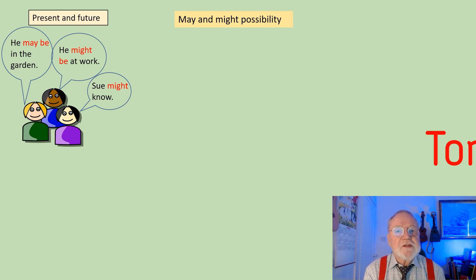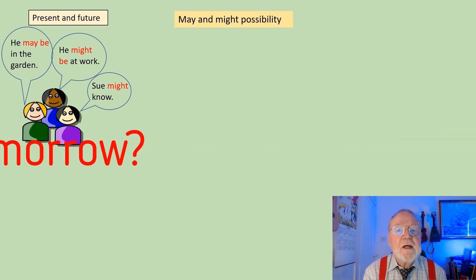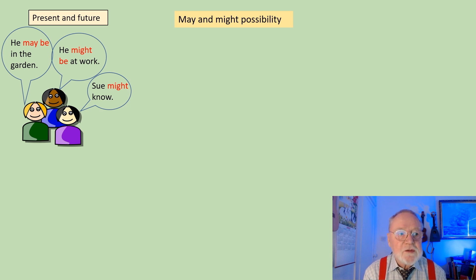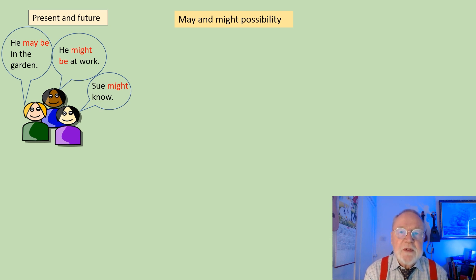Supposing I said: where will Peter be tomorrow? Well, I can actually use the same answers. He may be in the garden. He might be at work. Sue might know. If you put the adverb 'tomorrow' after any of these, you'll see why — Sue might know tomorrow, he might be at work tomorrow, and so on.